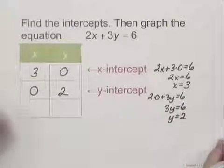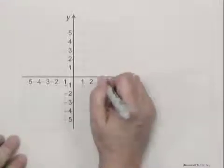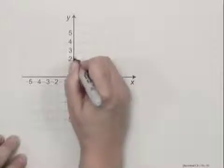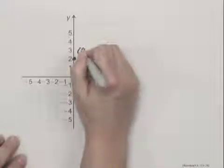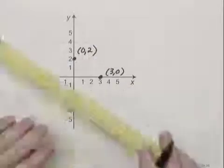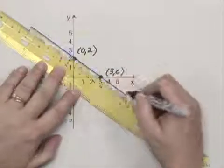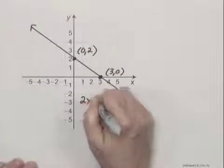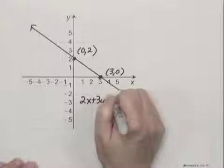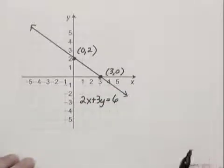So we can plot those points and draw the line. We have (3, 0) for the x-intercept and (0, 2) for the y-intercept, and we can label those. And we can draw the line and label it. We had 2x plus 3y equals 6. Now we can use a third point as a check to make sure that we have the correct line.